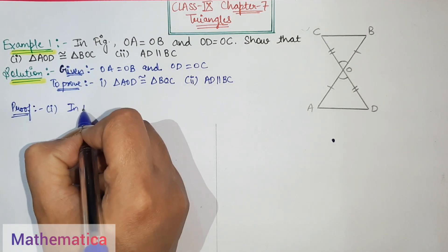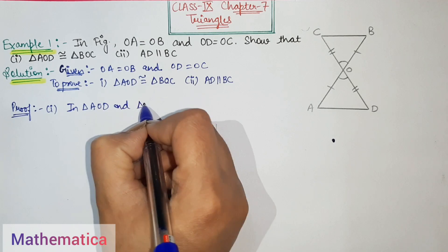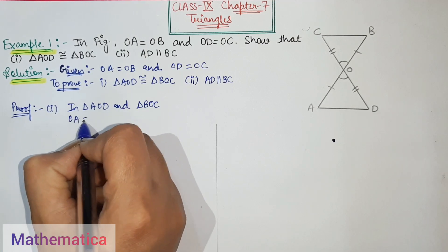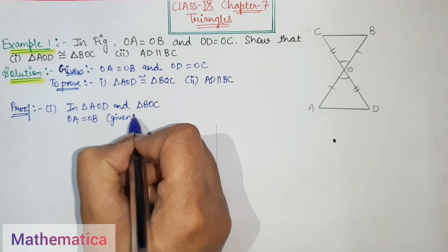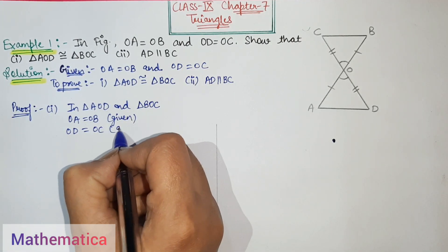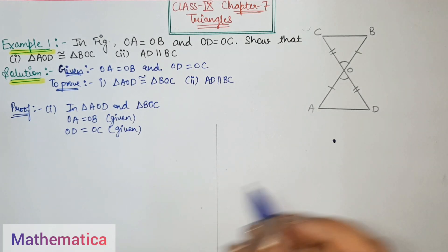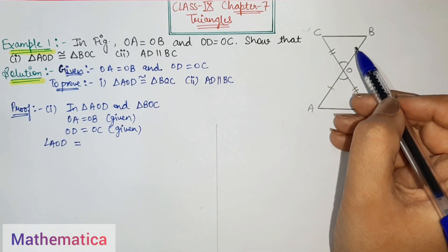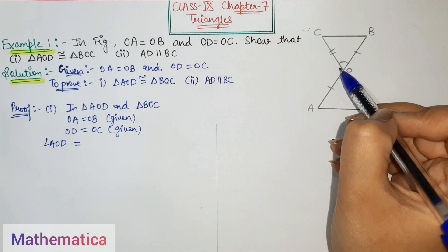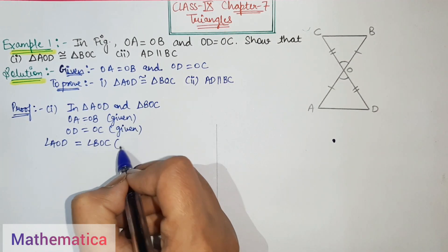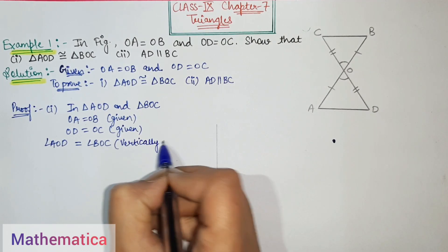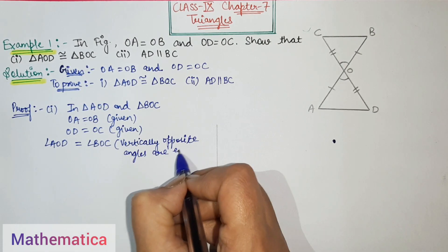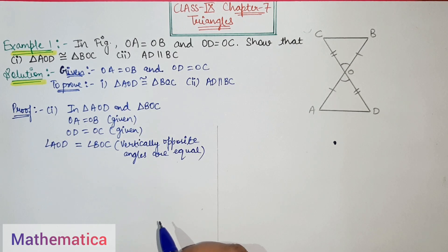In triangle AOD and triangle BOC: first, OA equals OB, which is given in the question. Secondly, OD equals OC, which is also given in the question. Third, angle AOD equals angle BOC — this angle equals angle BOC — because vertically opposite angles are equal.